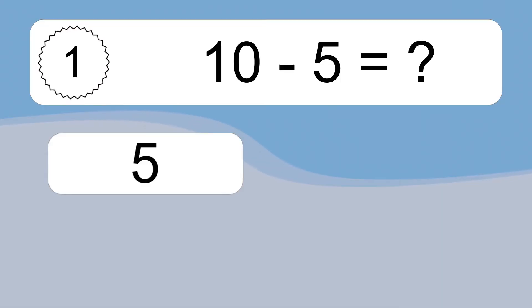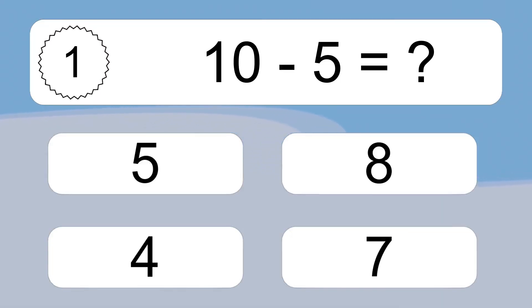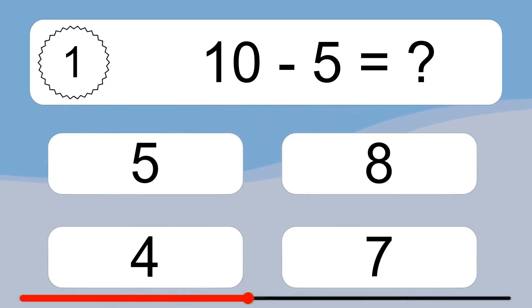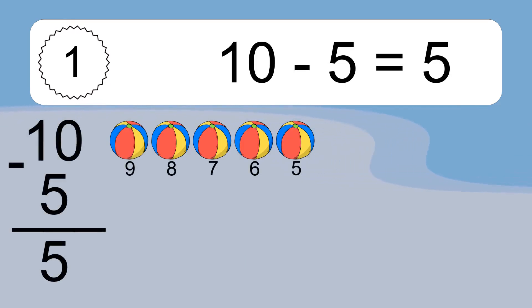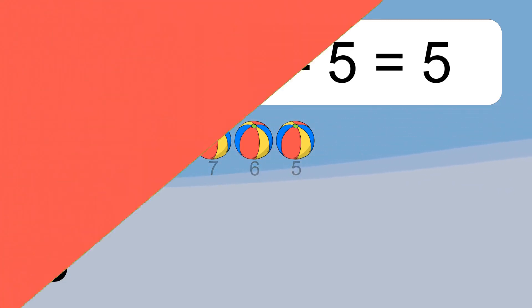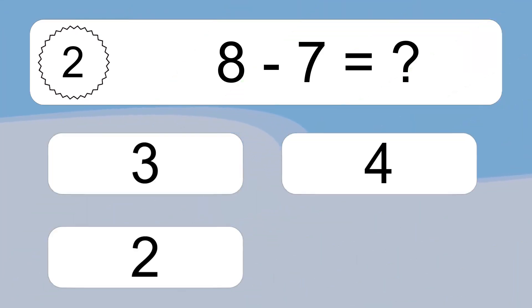10 minus 5 equals what? 10 minus 5 equals 5. Let's count it: 9, 8, 7, 6, 5.